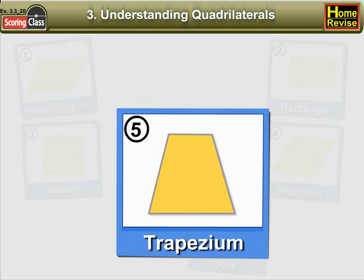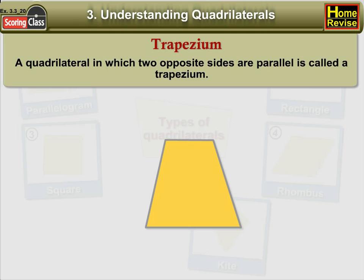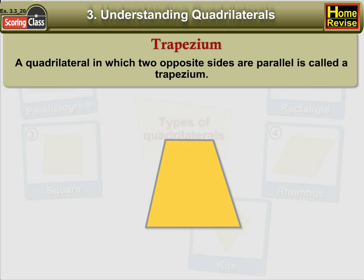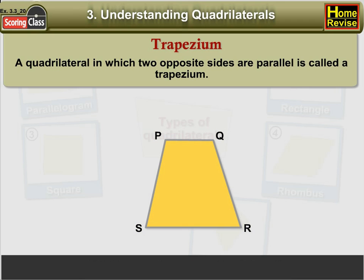5. Trapezium. A quadrilateral in which two opposite sides are parallel is called a trapezium. In this figure, PQRS is a quadrilateral in which PQ is parallel to SR. Therefore, PQRS is a trapezium.